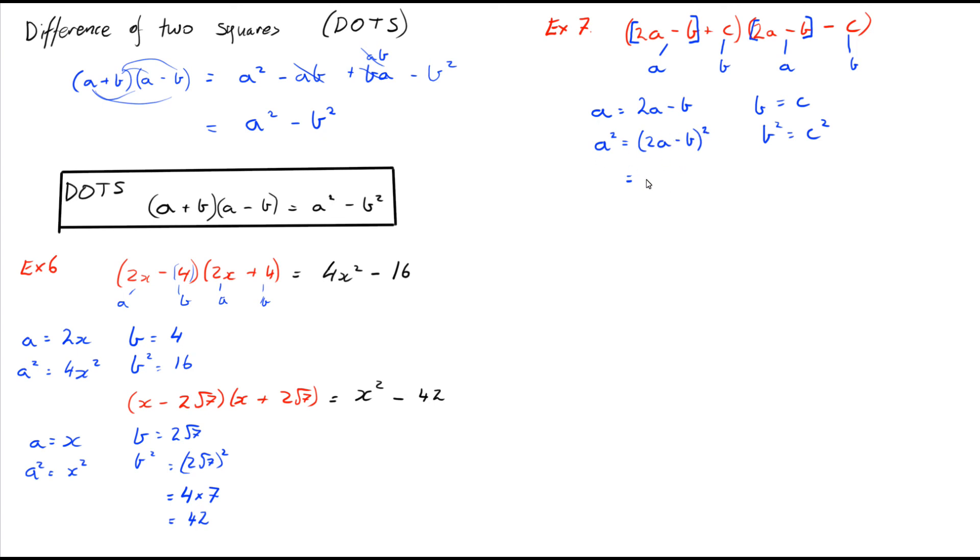Now (2a - b)² is our perfect square formula. If you remember, (a + b)² = a² + 2ab + b² from the previous video. So if we've got (2a - b)², we end up with 2a times itself, so 4a². Then -2 times 2a times b, plus b² at the end. Tidying up, we get 4a² - 4ab + b².